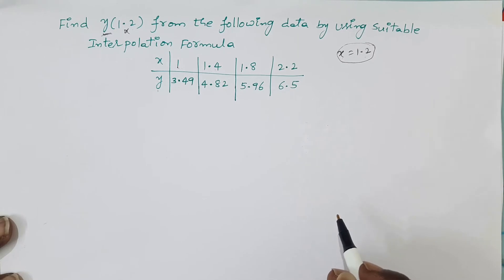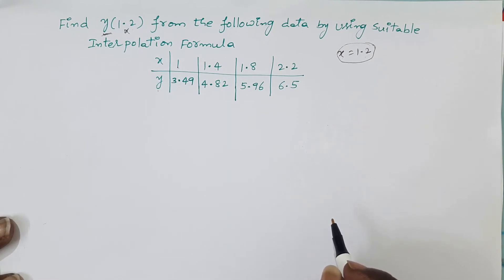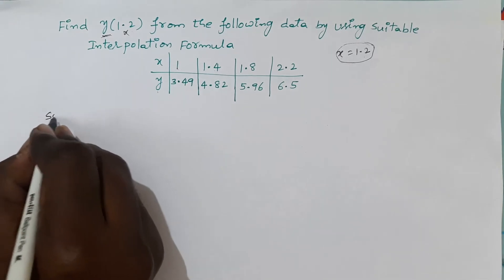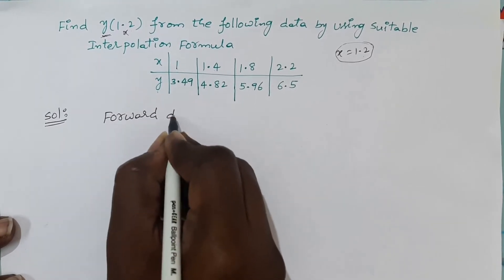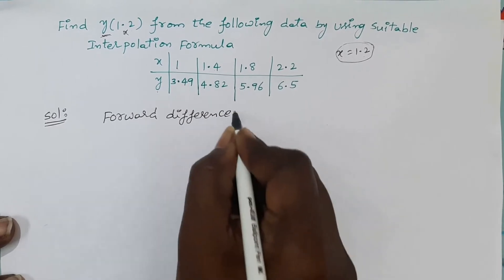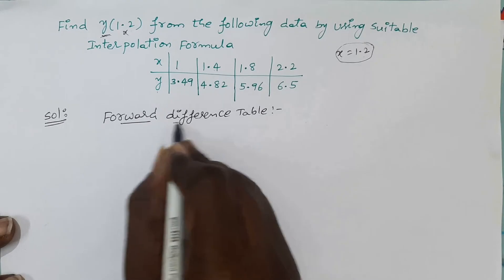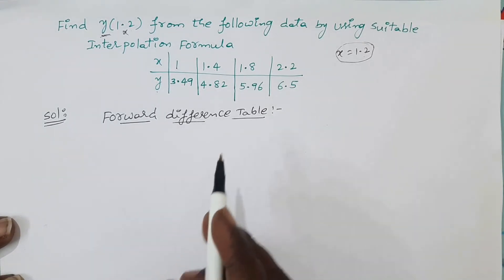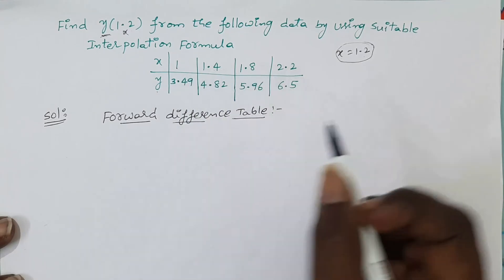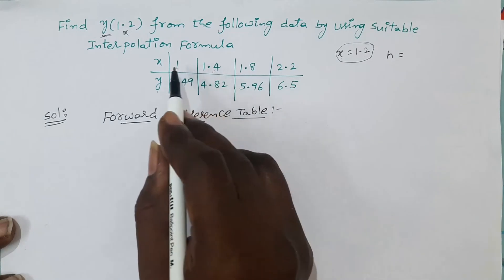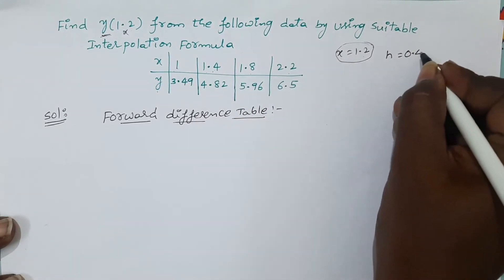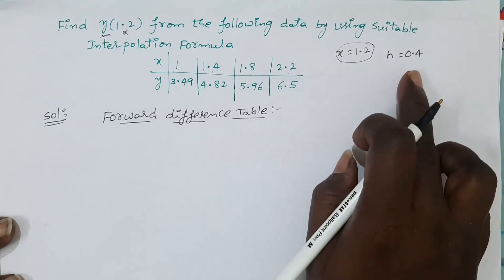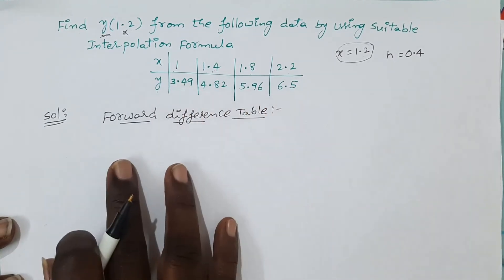Newton's forward interpolation formula is suitable here. Before applying it, we should construct the forward difference table. We observe that the x values are separated by equal differences: h = 1.4 − 1 = 1.8 − 1.4 = 2.2 − 1.8 = 0.4. Since the data is equally spaced, we can construct the forward difference table.